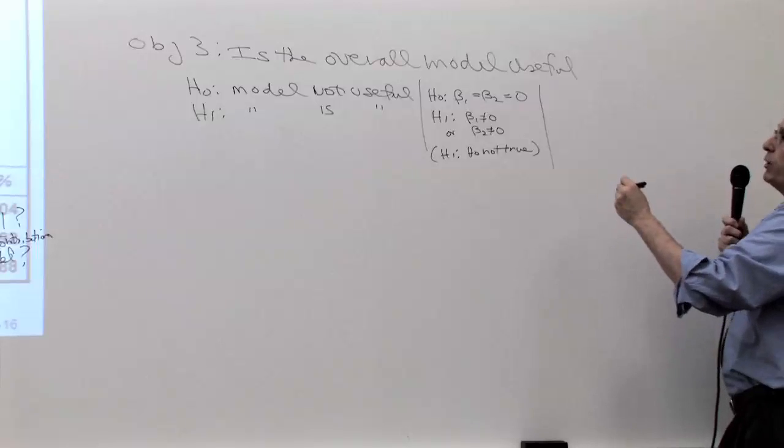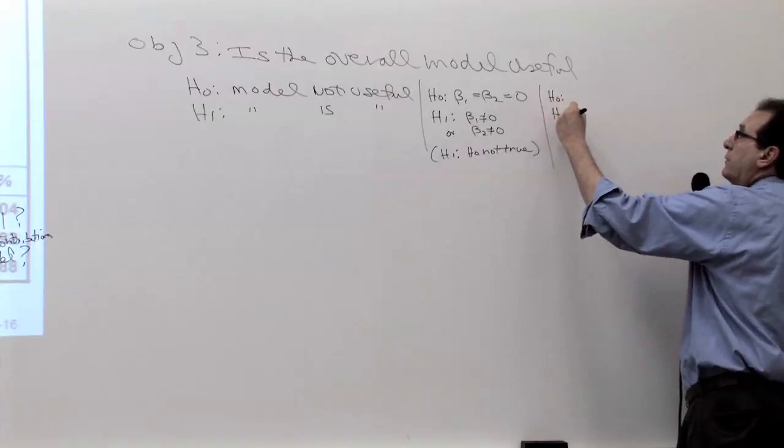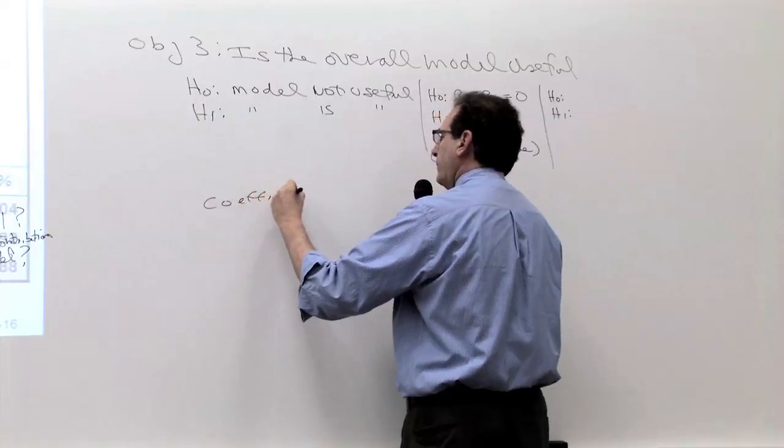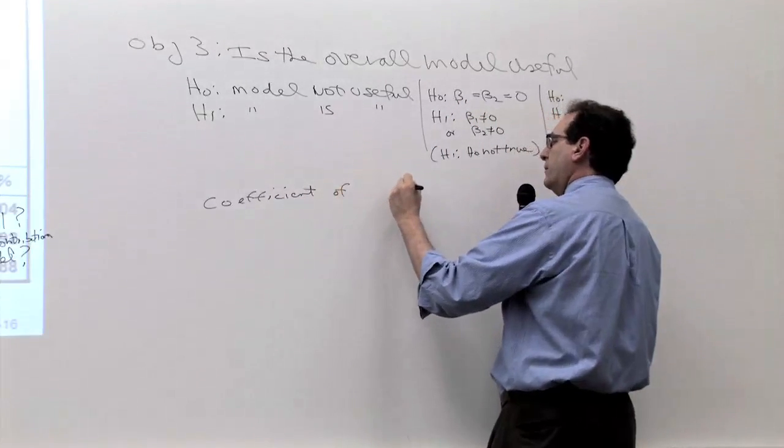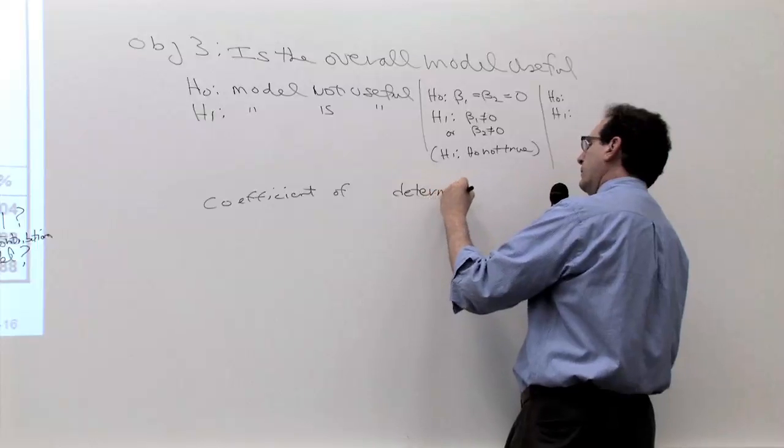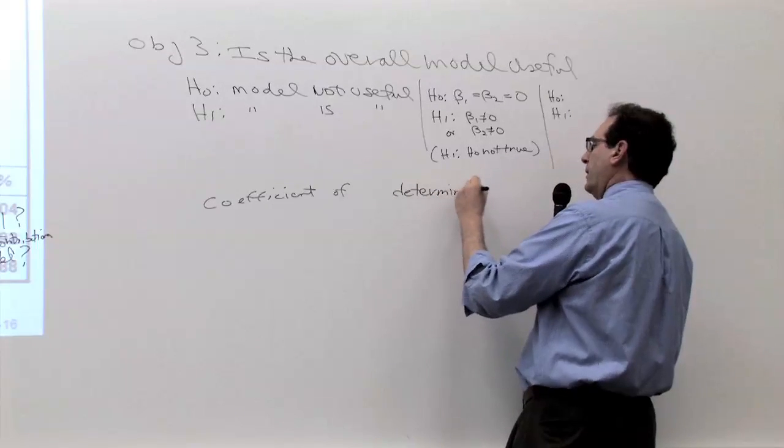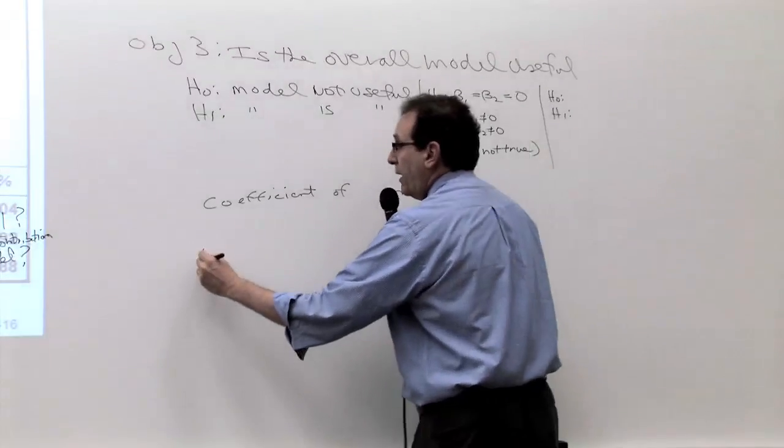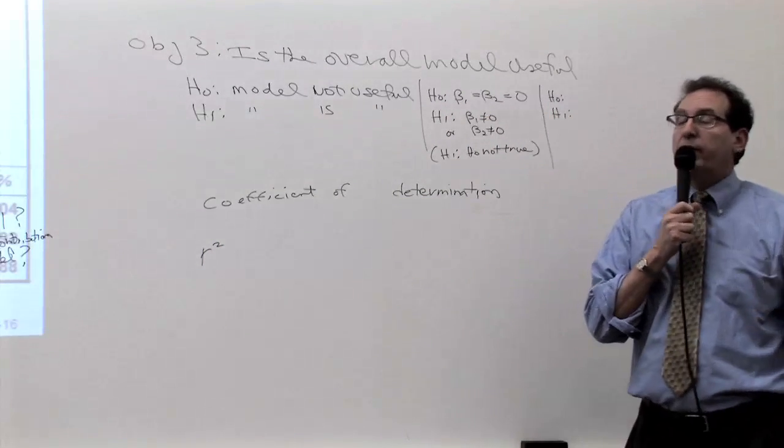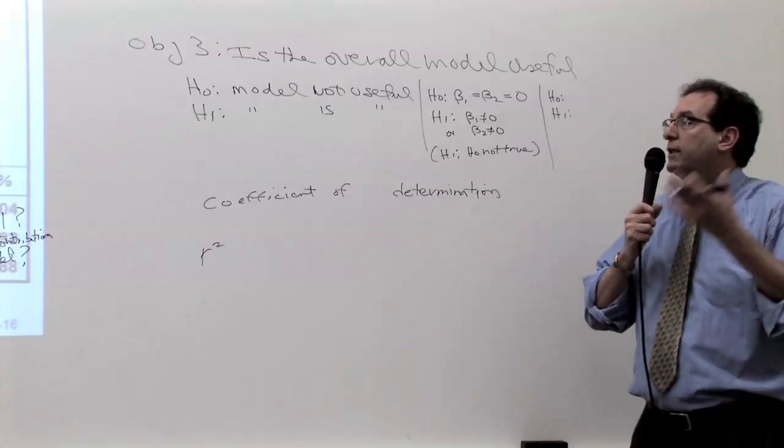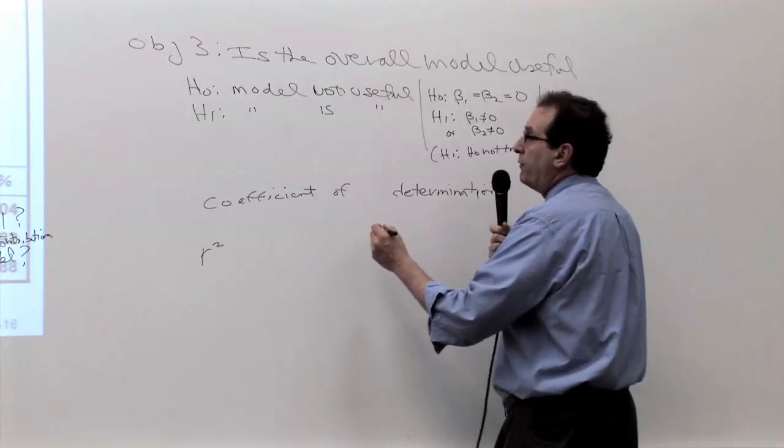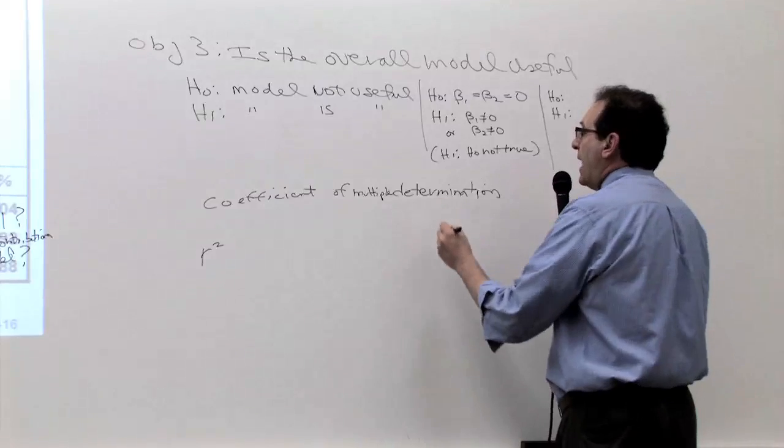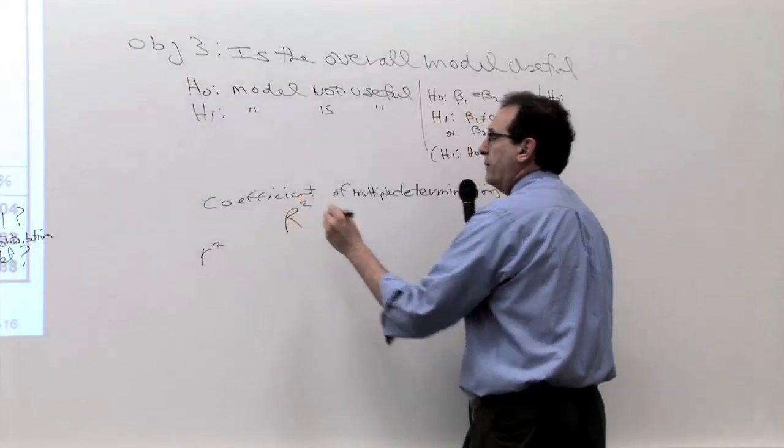But it turns out there's an easier way to express the H0 and the H1, and that's using something called, which we're up to right now, the coefficient of multiple determination. Now, anybody recall the coefficient of determination? Leave a space there, please. I'm going to put in the word determination. Anybody recall the symbol for the terminology? Yes, Marco? So the R squared of chapter 13 was called coefficient of determination, and it represented what percentage of the Y is being explained by the X. Now that we have chapter 14 of many variables, it's going to be called a coefficient of multiple determination, and it means the same thing, multiple determination, and the symbol is going to be the capital R squared. That's capital R squared.